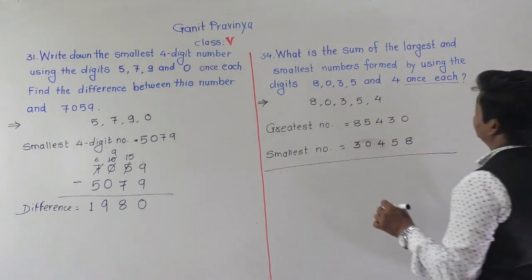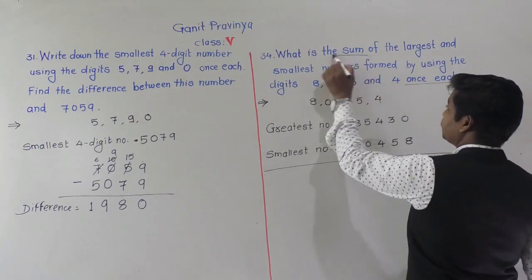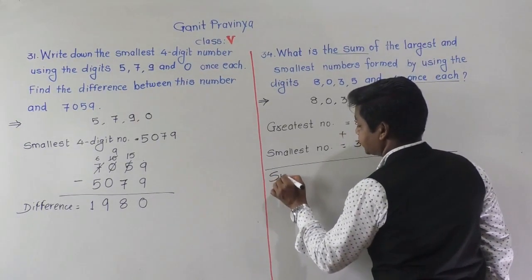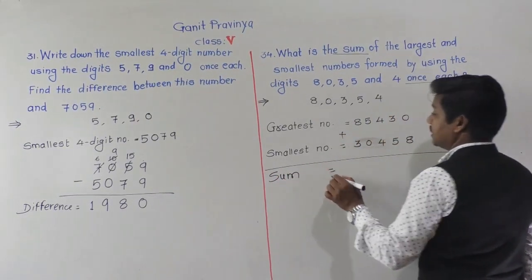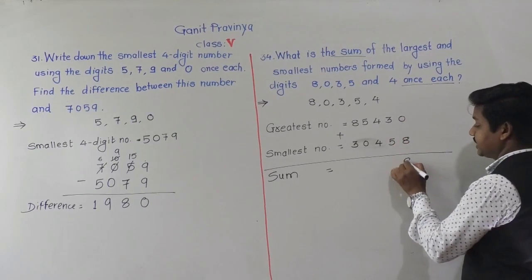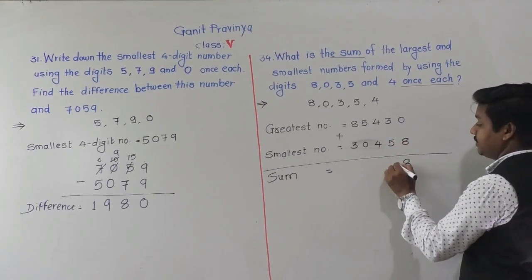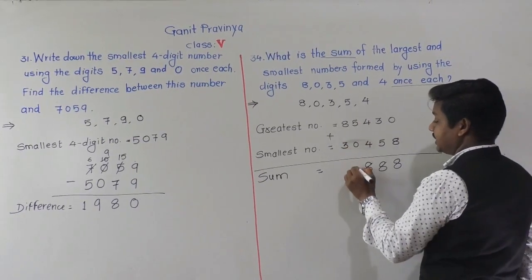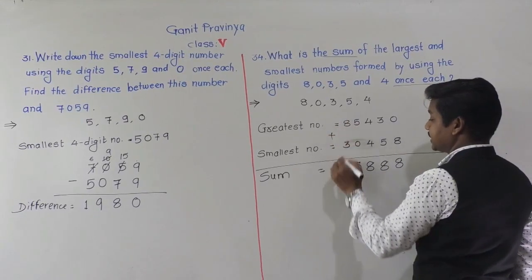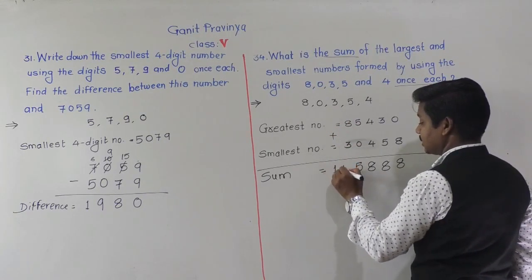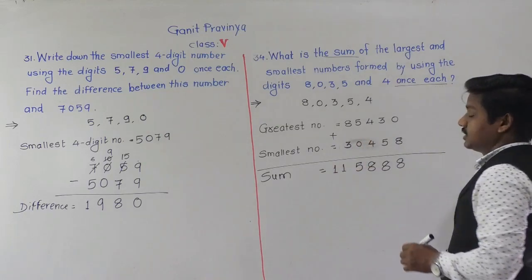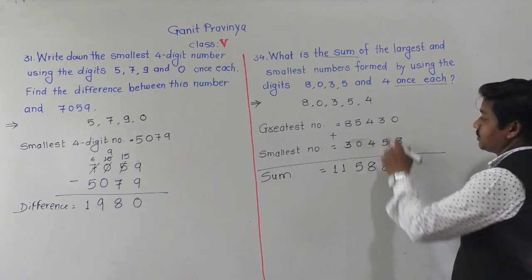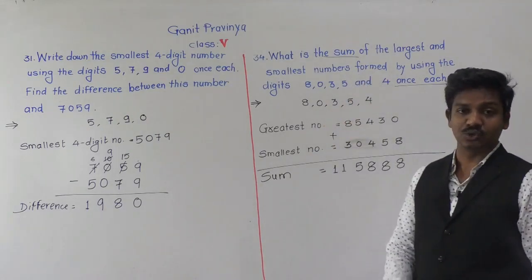Now we have to find the sum of the greatest and smallest numbers: 85,430 plus 30,458. Adding: 0 plus 8 is 8, 3 plus 5 is 8, 4 plus 4 is 8, 5 plus 0 is 5, and 8 plus 3 is 11. So the sum is 1,15,888.